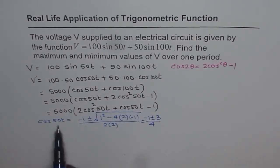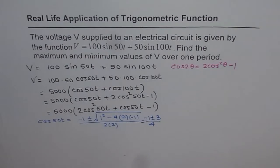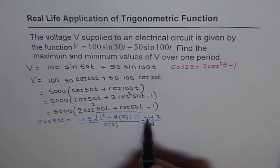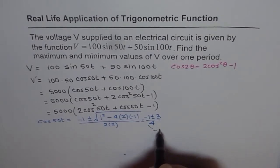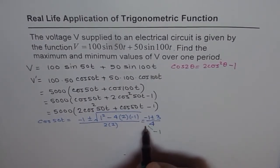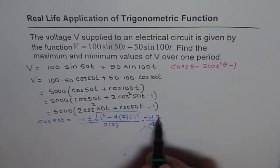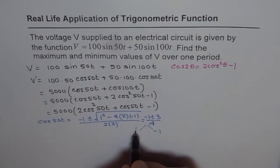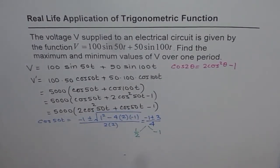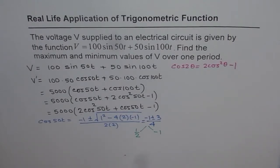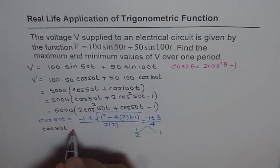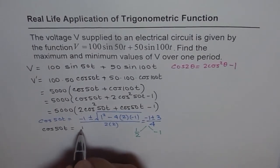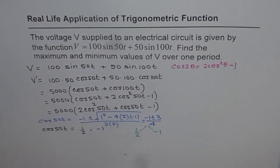That is the solution for cos(50T), which gives us two values. Taking minus 1 minus 3 gives minus 4 over 4, which equals minus 1. Taking minus 1 plus 3 gives plus 2 over 4, which equals one half. So cos(50T) equals either one half or minus 1.